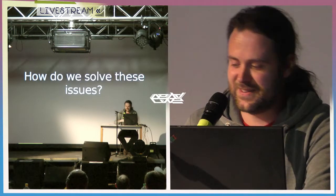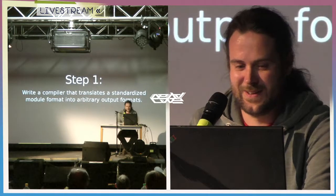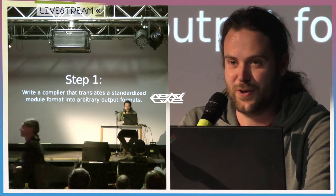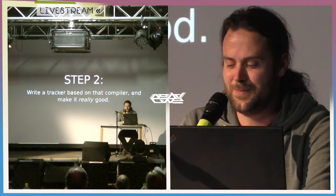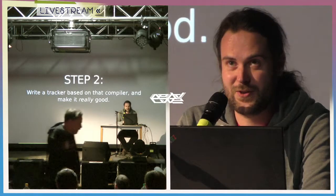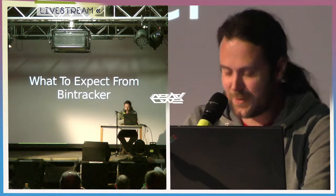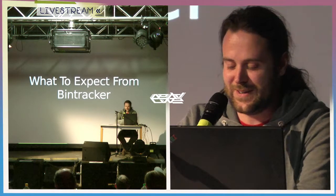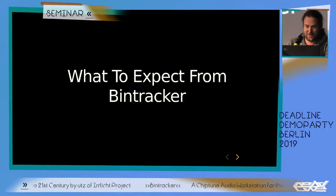So the question for me is: how do we solve these issues, how do we deal with this situation? And the answer to that is of course with another tracker. Here's my plan: step one, write a compiler that takes a standardized module format and compiles it into an arbitrary target output format based on rules that you specify in a simple config file. Step two, write a tracker that's based on that compiler and make that one really, really good. That will be a cross-development tracker running on PC targeting the usual operating systems, and it will be called Bin Tracker.